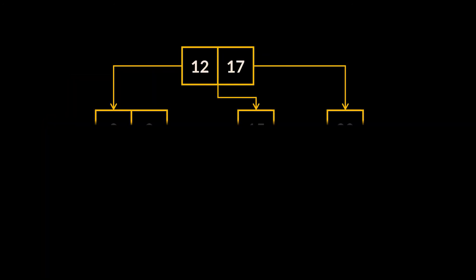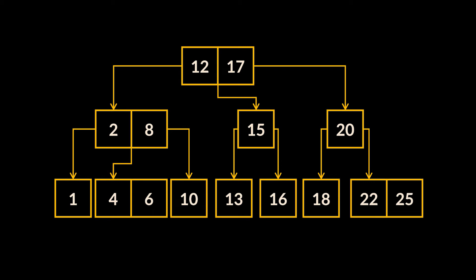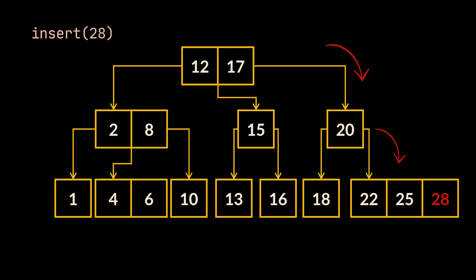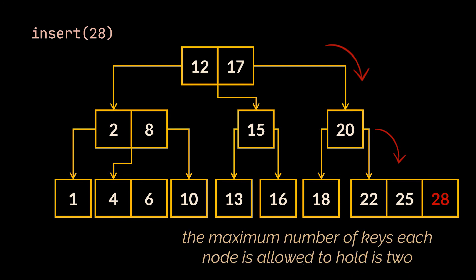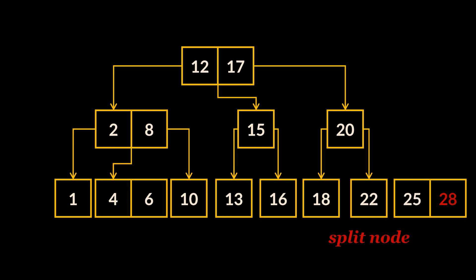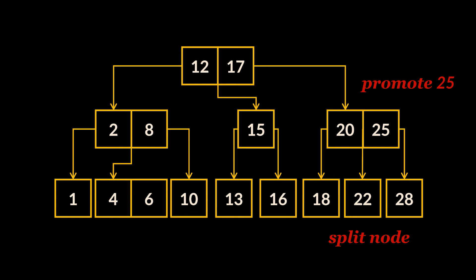Suppose we have a B-tree of order 3, also known as the two-three B-tree — by far the most popular B-trees. Consider inserting the element 28. Starting at the root and traversing as in binary search trees, element 28 should sit in the node colored in red. However, this is a two-three B-tree and the maximum number of keys per node is two. So we split this node evenly into two nodes and promote element 25 — the middle element — to the parent node. If the parent already had two elements, the splitting and promoting actions would keep going all the way up to the root.